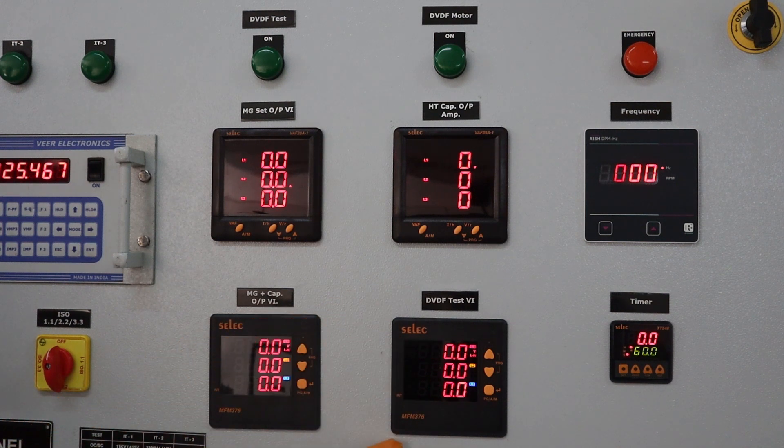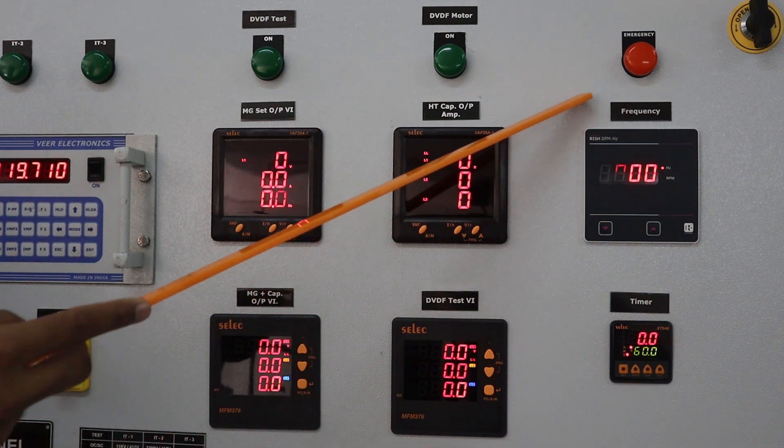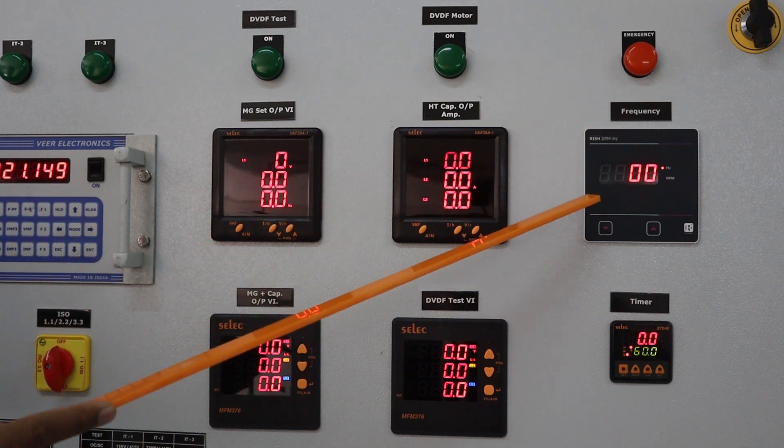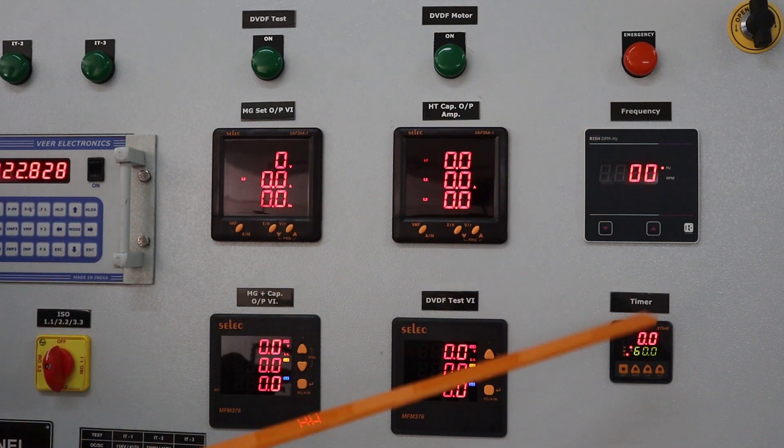This is VIF meter for DBDF test of power transformer at 22 kV. This is emergency on off indication lamp. This is DBDF output frequency meter and timer.